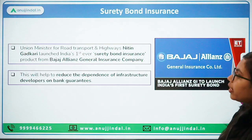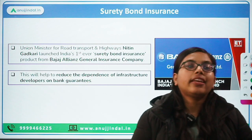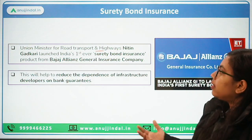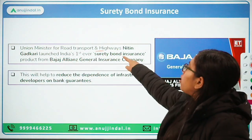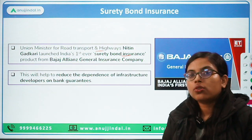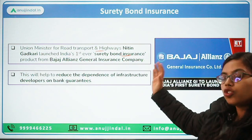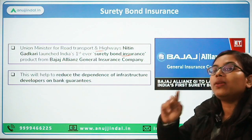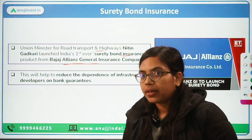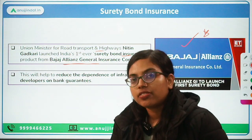The next news talks about surety bond insurance. But before understanding what surety bonds are, let us first understand the news. Recently, the Union Minister for Road Transport and Highways, Nitin Gadkari, has launched India's first surety bond insurance product for the infrastructure sector — for projects such as building highways, roads, schools, and hospitals. This product will be made available by Bajaj Allianz General Insurance Company.